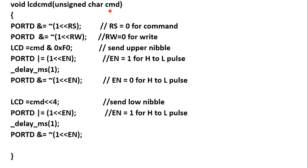To summarize the LCD command function: we set RS = 0 and RW = 0, then AND the command with 0xF0 to extract the upper nibble and send it with an enable pulse, then shift the command left 4 bits to bring the lower nibble up and send it with another enable pulse. The LCD command register then receives the complete 8-bit command.